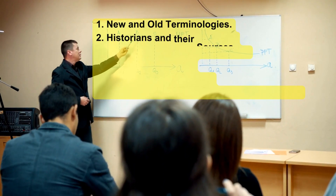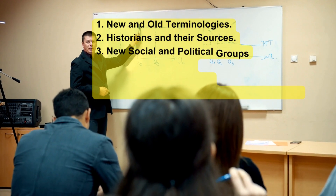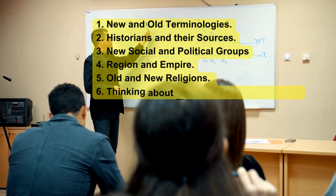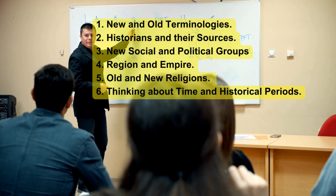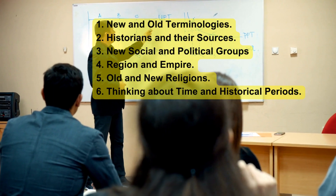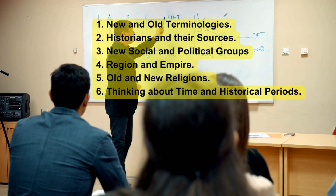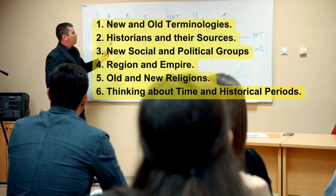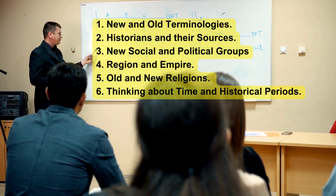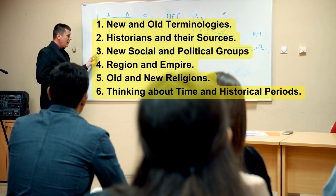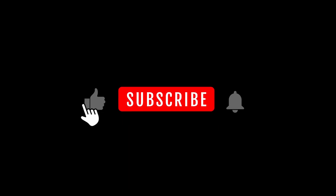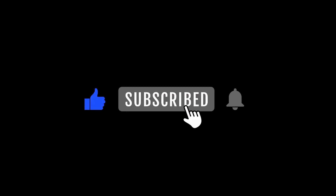In this chapter we understood: new and old terminologies, historians and their sources, new social and political groups, region and empire, old and new religions, and thinking about time and historical periods. For more such videos, please like, share and subscribe to PMK classes. Thank you.